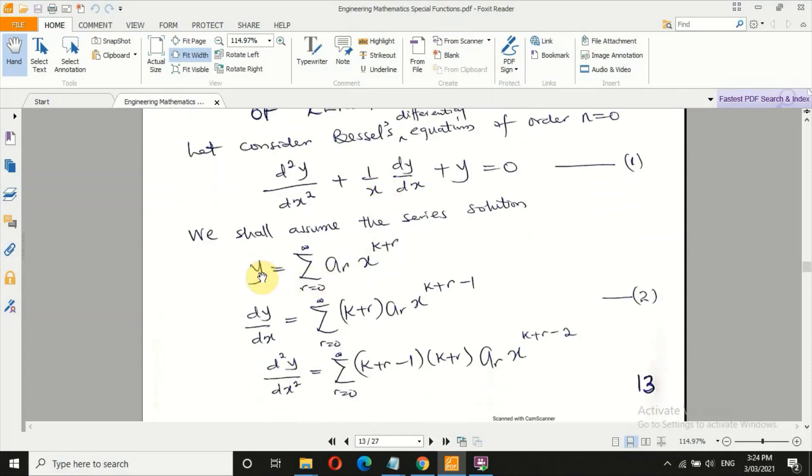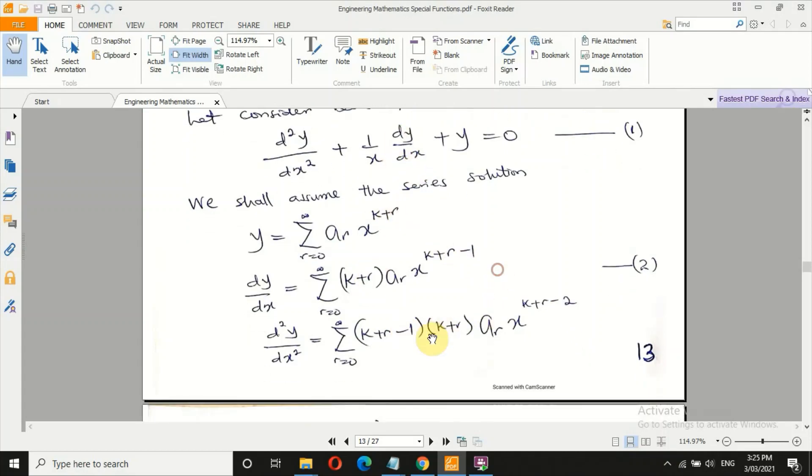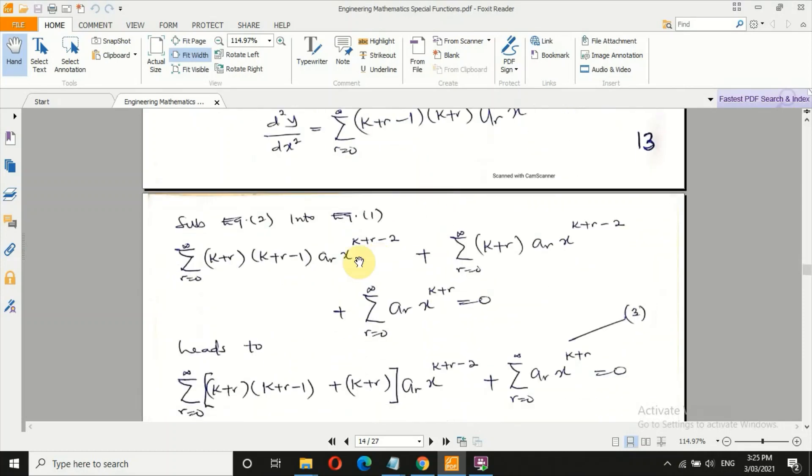Let's assume that solution: y equals summation from 0 to infinity, ar x to the k plus r. The only difference is the introduction of k here, which we find when we set r equals 0. Differentiate the first time: k plus r comes down here, then ar k plus r minus 1. Differentiate the second time: k plus r multiplied by k plus r minus 1, to the power minus 2. Let's substitute everything back to equation 1. Remember 1 over x, r will change to x power minus 1. So you obtain this expression.